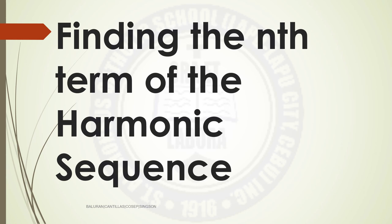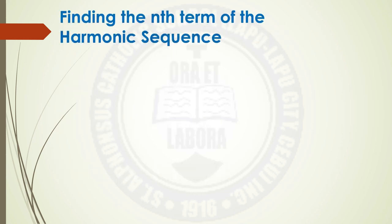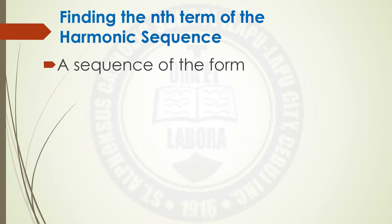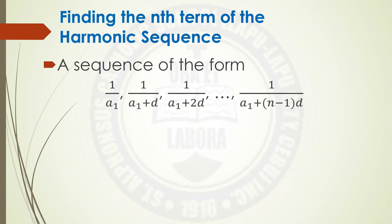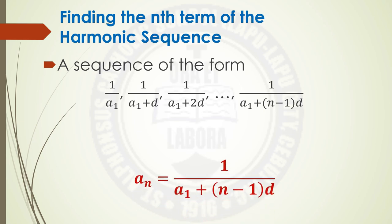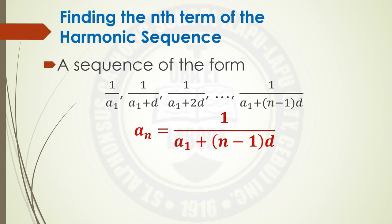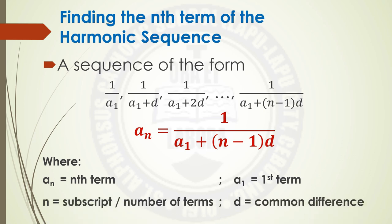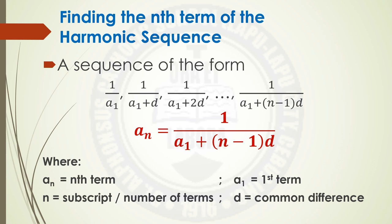Finding the nth term of the harmonic sequence. A sequence of the form 1/(a₁), 1/(a₁+d), 1/(a₁+2d), ..., 1/(a₁+(n−1)d). Therefore, to find the nth term, a_n equals 1 over (a₁ plus the product of (n−1) and d), where a_n is the nth term, a₁ is the first term, n is the number of terms, and d is the common difference.